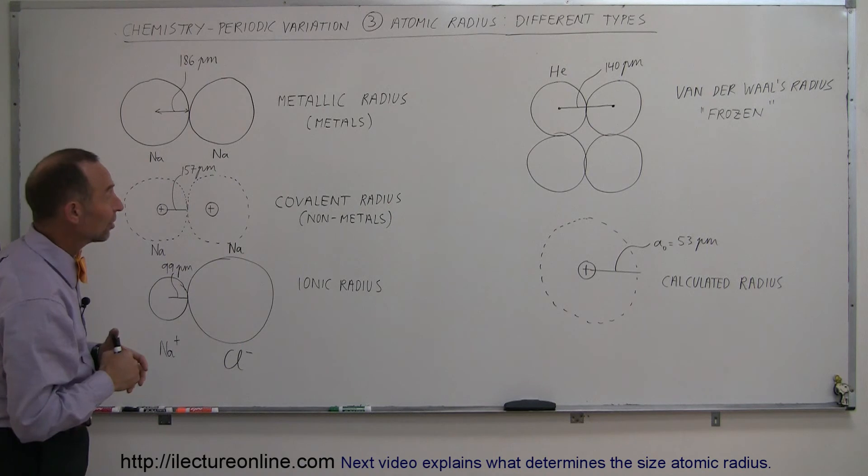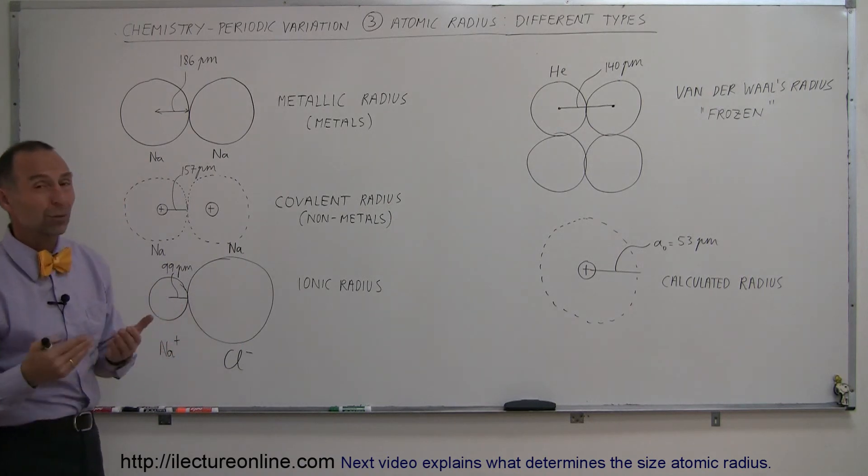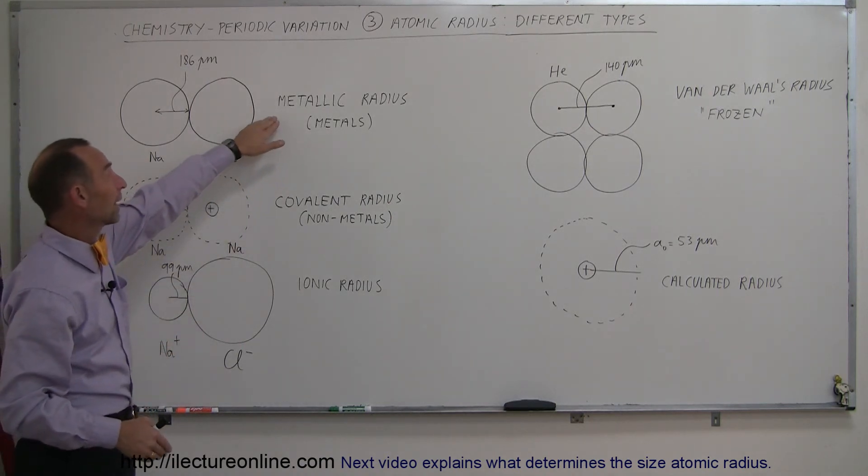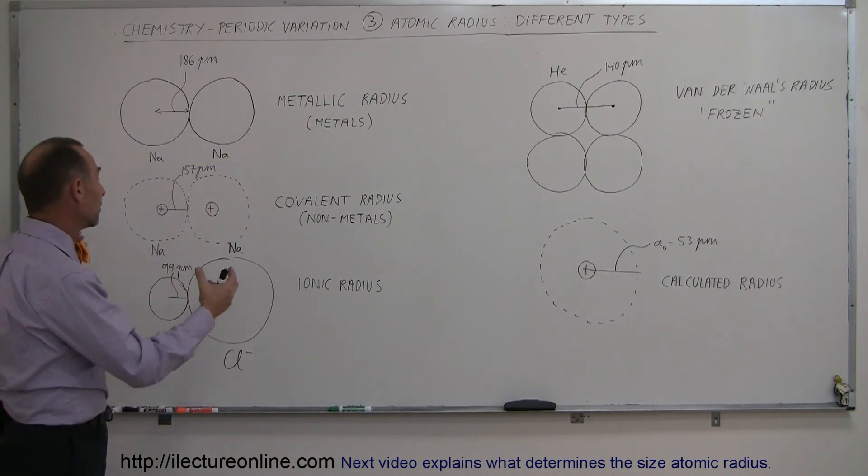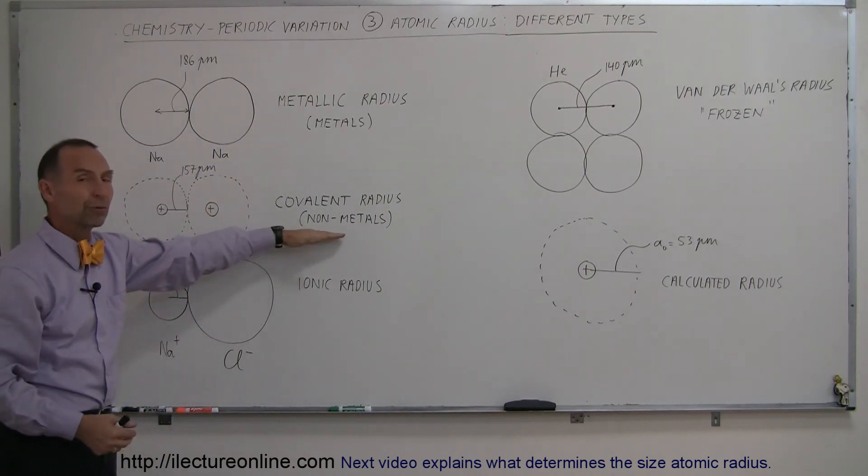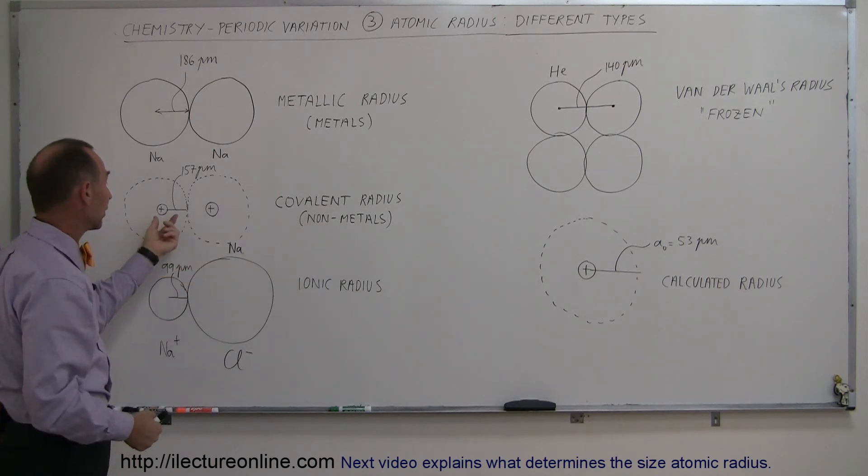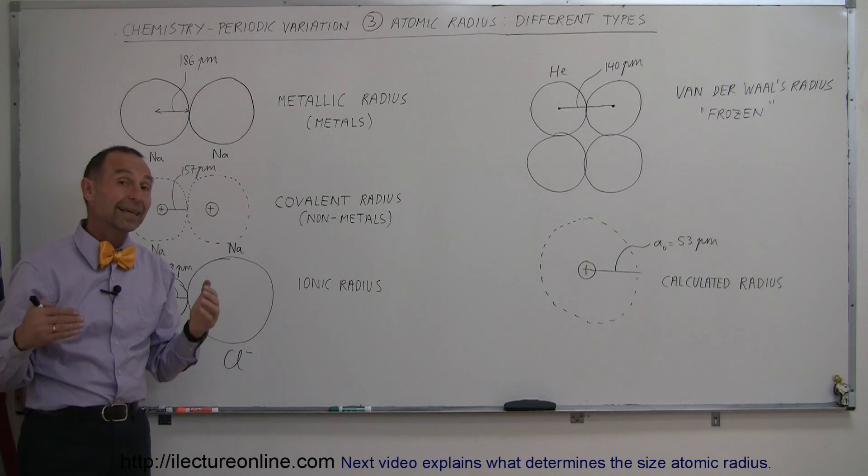So, in this case, we can see that there's about five different ways of looking at the radius of an atom. We can take a look at it when it's in a metallic state, typically for metals. We can look at it when it makes covalent bonds. We use that for non-metals. Notice that the covalent bond tends to be smaller than the metallic bond.